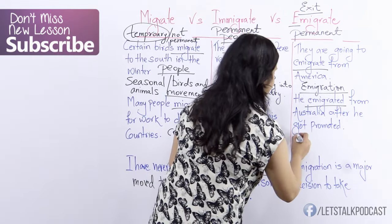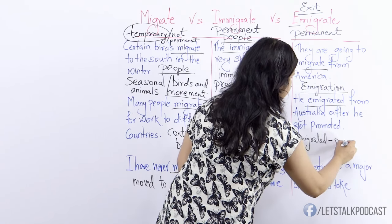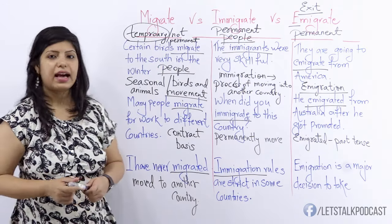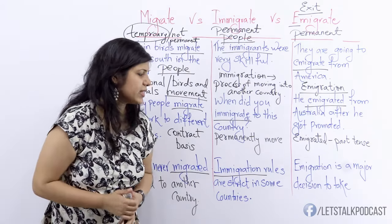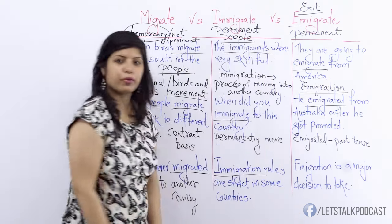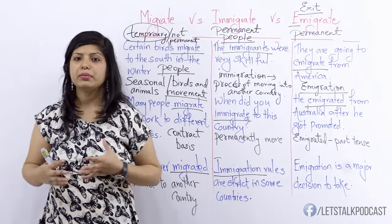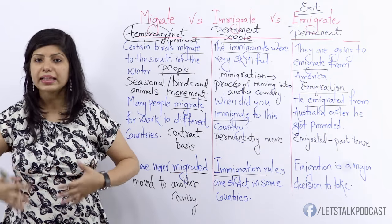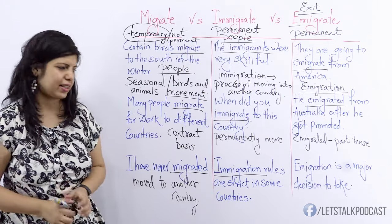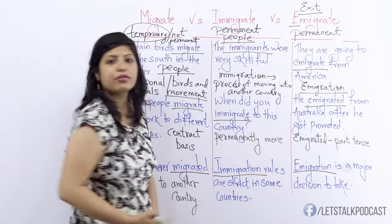And finally: emigration is a major decision to take. Obviously that is very true because when you move out of your country — the place where you've been born and brought up — permanently for good, that's a huge, life-changing decision. The noun form of emigrate is emigration.